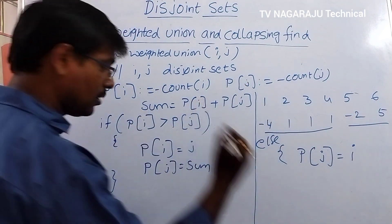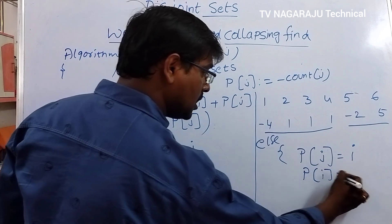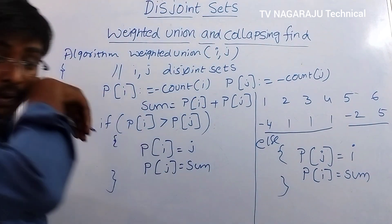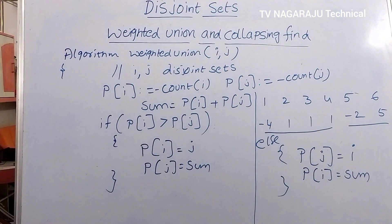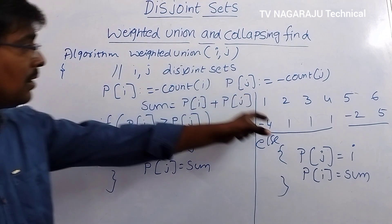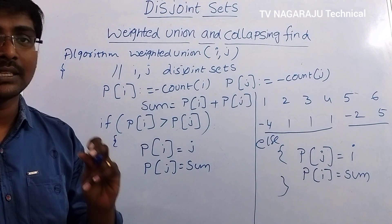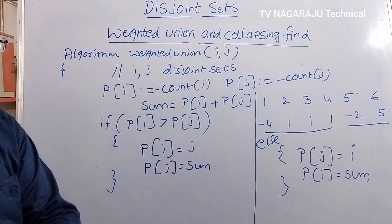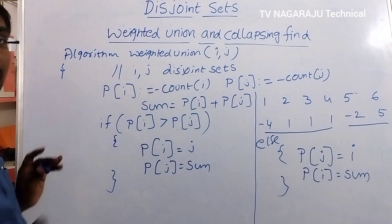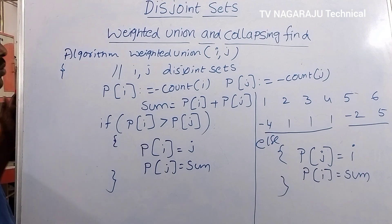That is the reason the parent of 5 becomes 1 in our example, and P(I) is updated to sum (minus 6). Whatever the tree, the small tree is connected to the tree which contains the highest number of nodes. This is the weighted union algorithm.